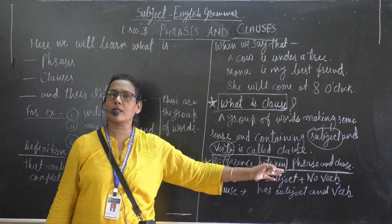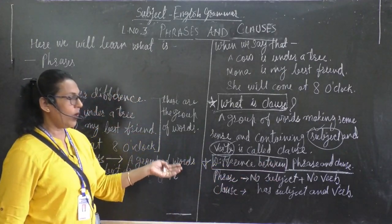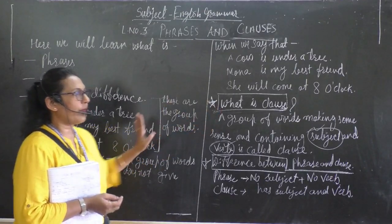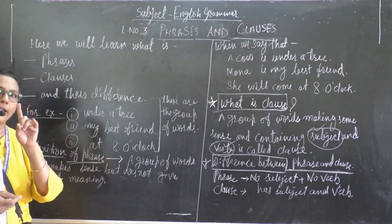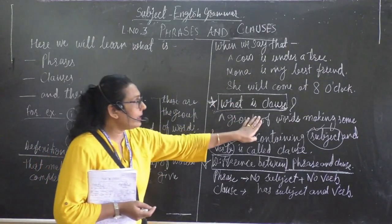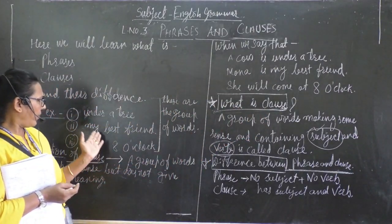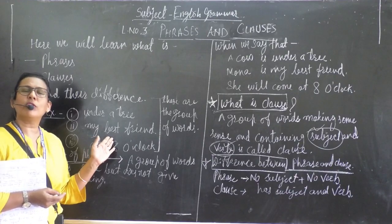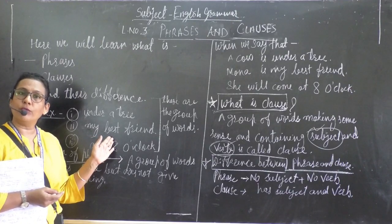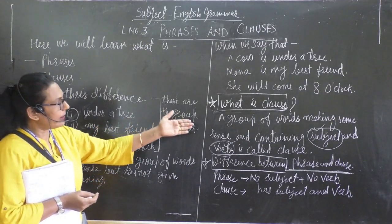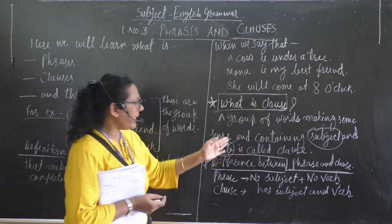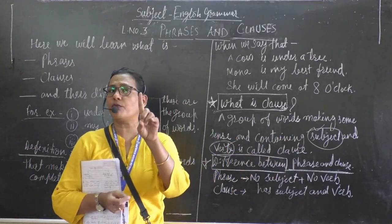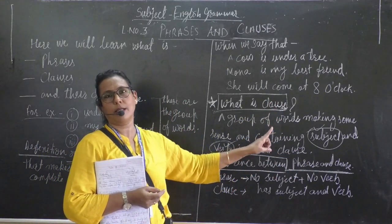So, in the clause, some phrases may not give a complete meaning, but in the clause, we need a subject and a verb. What is a verb? A verb is the action word. So, a group of words making sense and containing a subject and a verb — the subject and verb is very, very important in the clause.